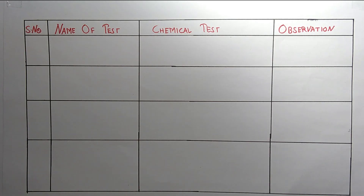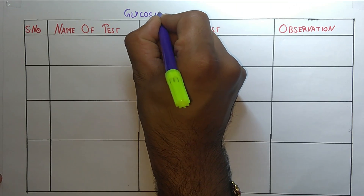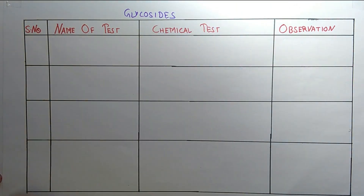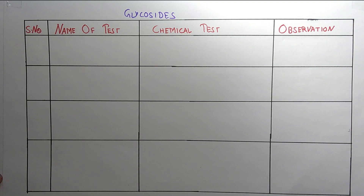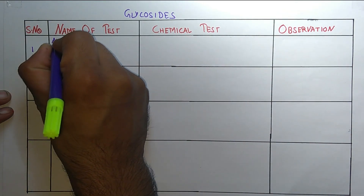Hello students, welcome to the channel. Today in this video we are going to talk about the chemical tests for the glycosides. We will cover four types of glycosides with their chemical tests: anthraquinone glycosides, saponin glycosides, cyanogenetic glycosides, and flavonoids. The first one is anthraquinone glycosides.